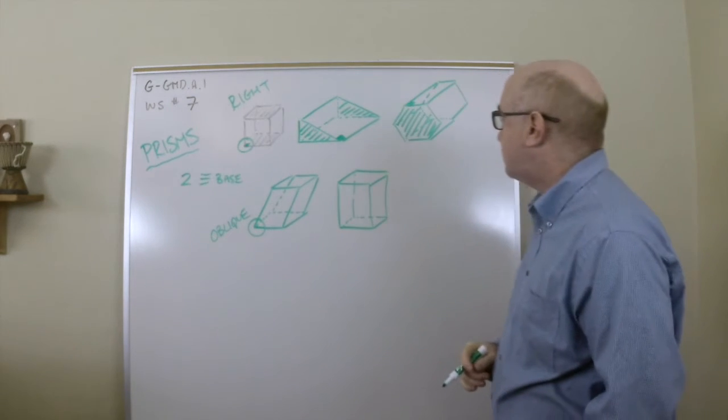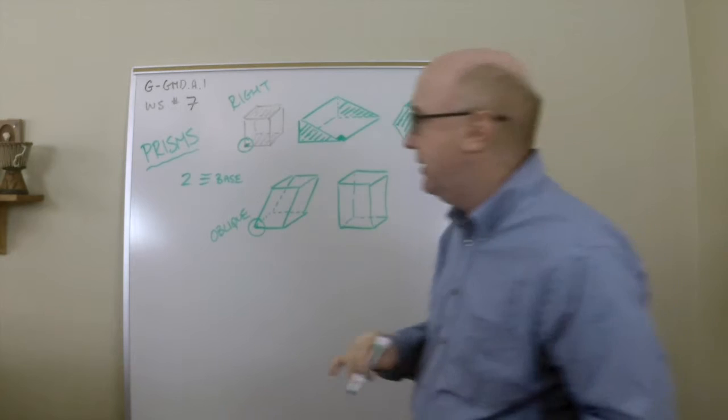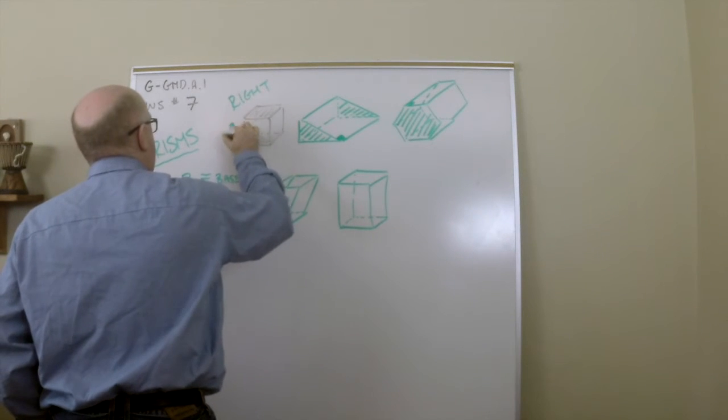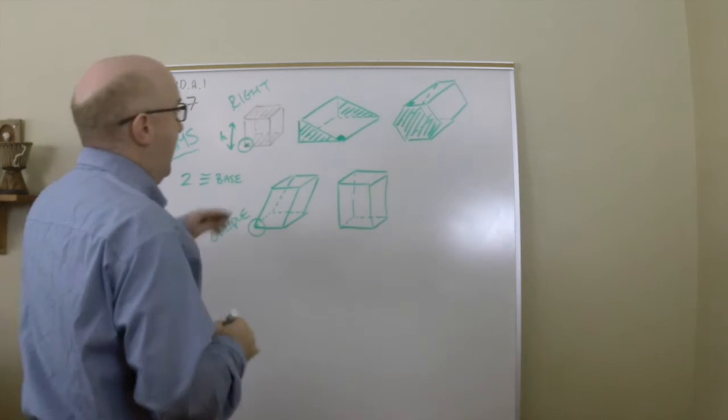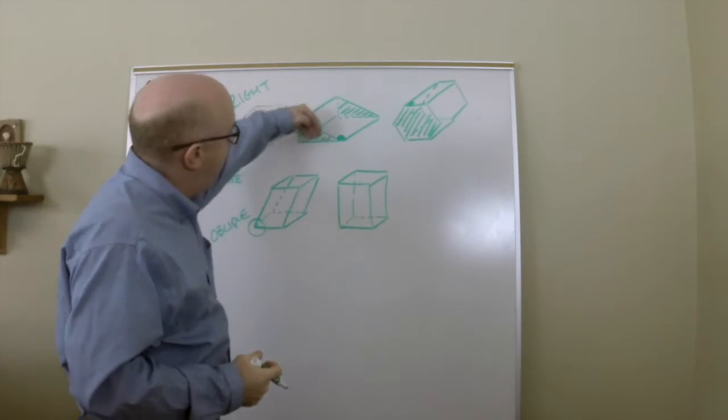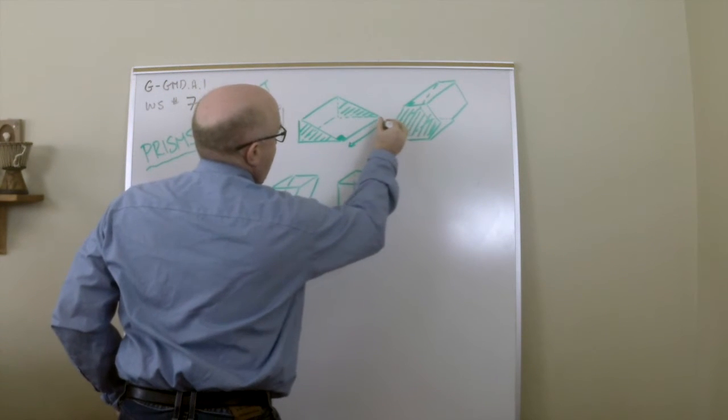The other thing, let's talk about height. Height is the distance between the two congruent bases. So height in this case is what you would expect it to be. Here you think of height from ground up, right?